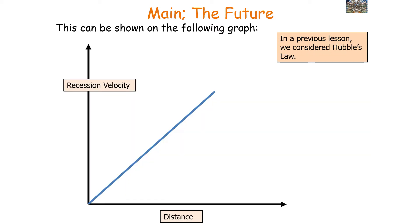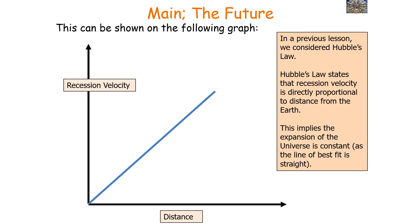Now we can show this on the following graph because in the previous lesson we considered Hubble's law. Hubble's law states that the recession velocity is directly proportional to the distance from the Earth. Now this implies the expansion of the universe is constant, as the line of best fit on this graph is straight.